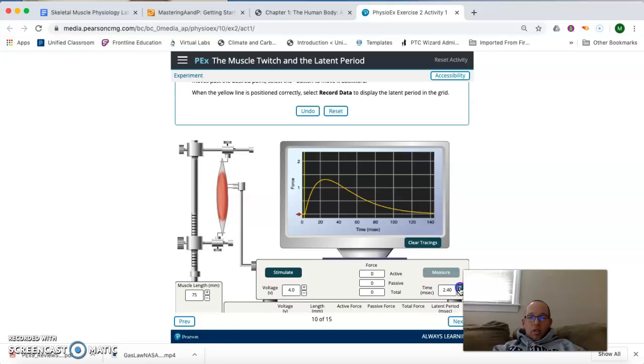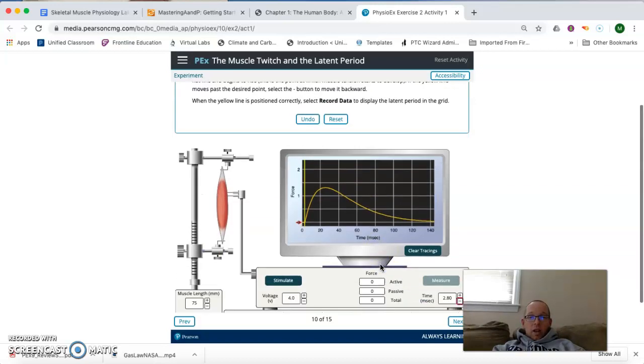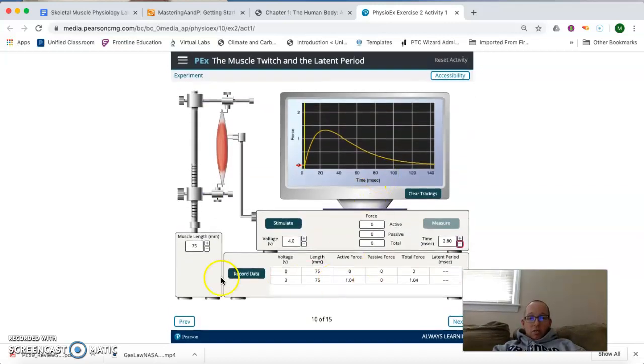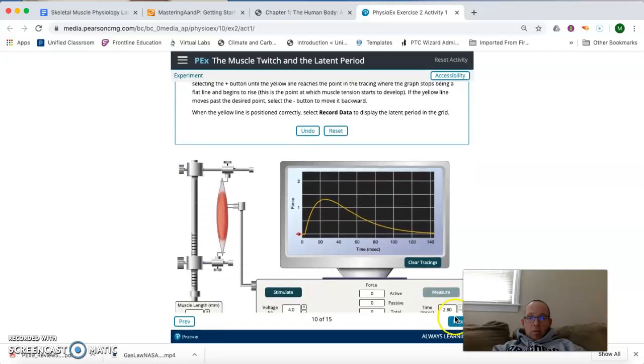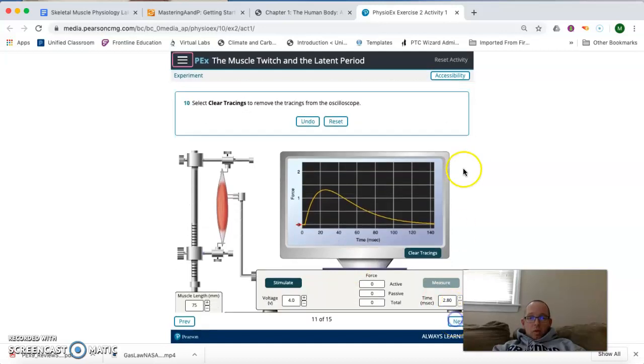So, 2.4, there's still nothing. 2.8, there's still nothing. 3.2, you notice that we have a little bit of force. Not much, but enough. So, we're going to backtrack a little bit to the last time it's zero. And now, the yellow line is positioned correctly. And we record our data. So, now, we're going to clear those tracings.